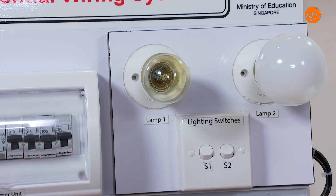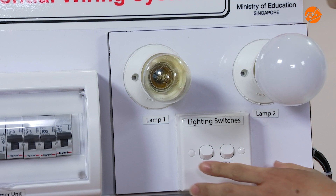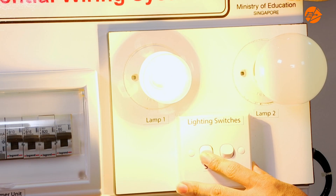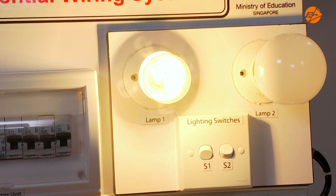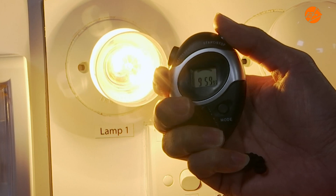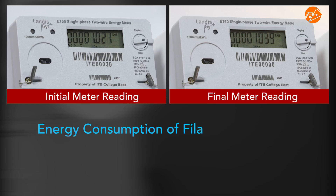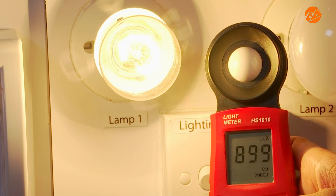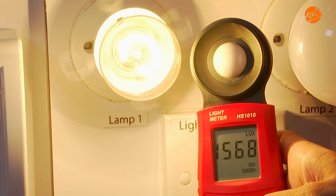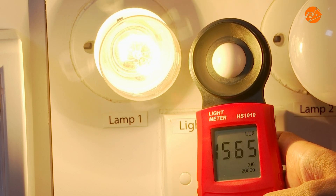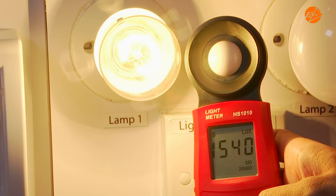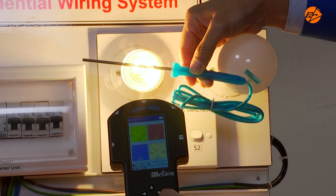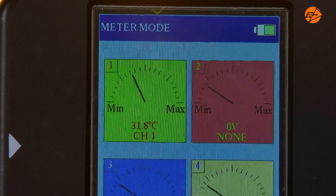Let's calculate the energy consumption of this filament bulb over a period of 10 minutes. The energy consumption of the filament bulb is 0.018 kilowatt hour. The filament bulb has a maximum intensity of about 15,400 lux. The temperature of the filament bulb is 31.8 degrees Celsius.